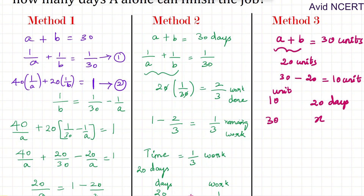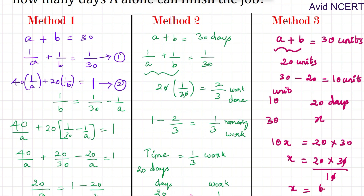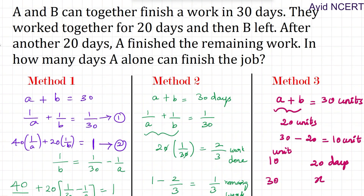By cross multiplication: 10x equals 20 times 30, so x equals 20 times 30 divided by 10. The zeros cancel, giving x equals 20 times 3, which is 60 days. Just stick with the method that is easier for you so you can use the same approach for all work-related problems. Thanks for watching. If you have any doubts, please let me know in the comments.